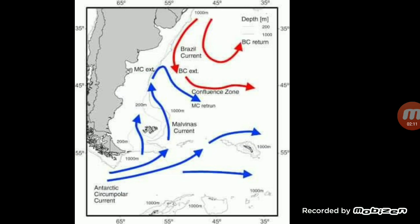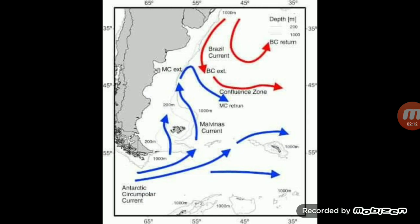The Falkland Current creates thick fog when it meets the warm water of the Brazil Current. Due to its impact, the Patagonia Desert has been created in the southeastern part of Argentina.